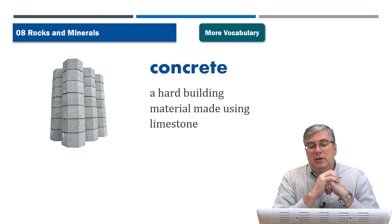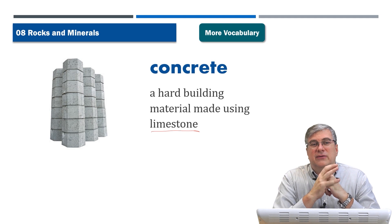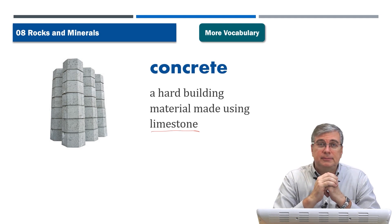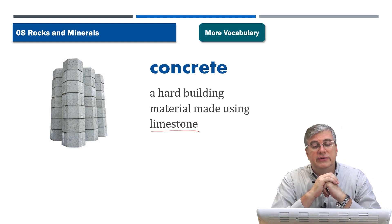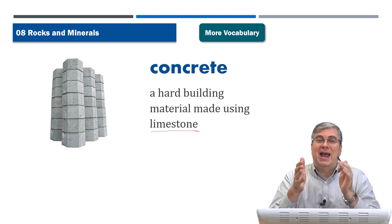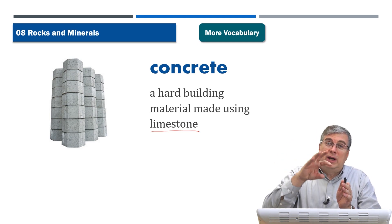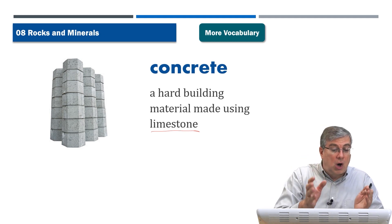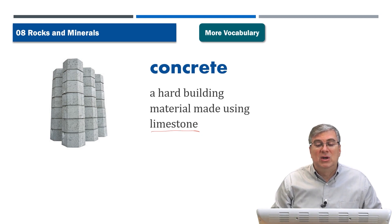Concrete is a hard building material made using limestone. The Romans were very famous for using and developing this technology — they even made concrete that could be used underwater to build amazing structures. Both in the city of Rome and throughout their empire, in aqueducts and many other cities, they used concrete. The nice thing about concrete is you can shape it: it's wet and pourable like a heavy liquid, and then it hardens into bricks, columns, or anything you need.